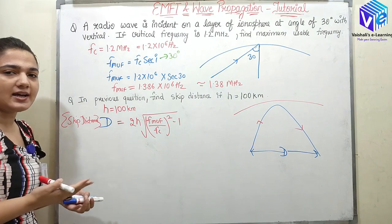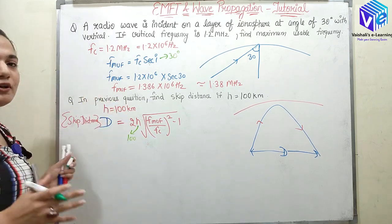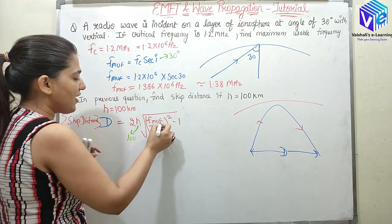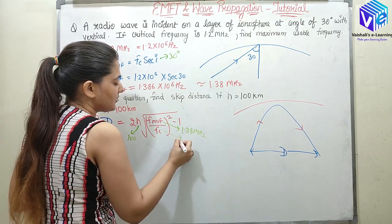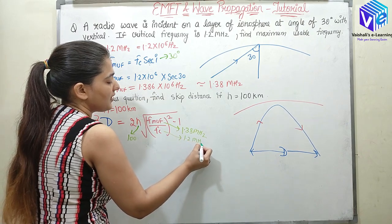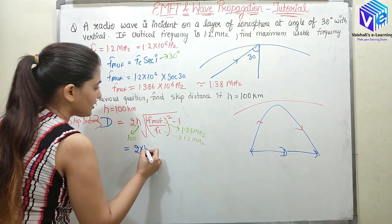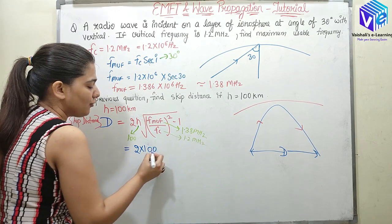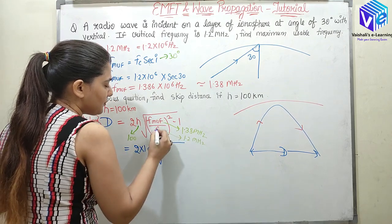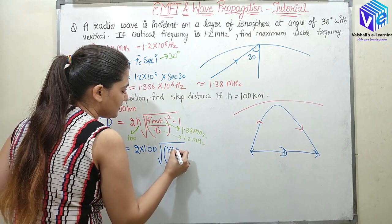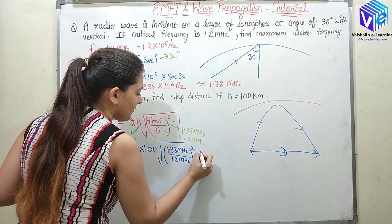So height, we have taken an imaginary height to be equal to 100 kilometers. We will be putting H equal to 100. We are taking all of the quantities from the previous question. Now Fmuf we already found out was 1.38 megahertz. Fc was given in the previous question, it was 1.2 megahertz. So we will be putting all these values. D will be equal to 2 × H. If I am taking height in kilometers, my skip distance will be coming out in kilometers only. So 2 × 100.